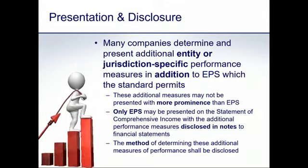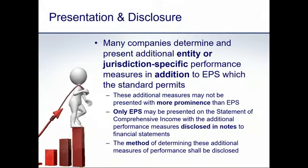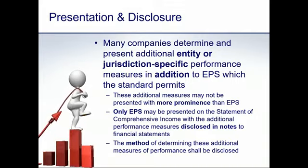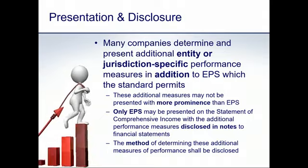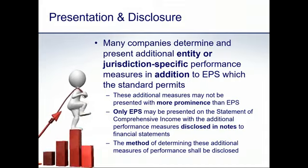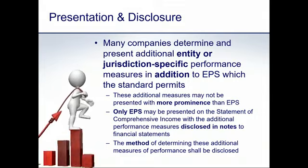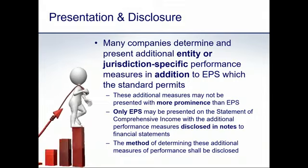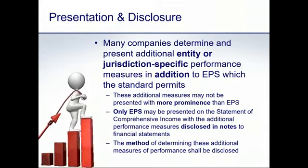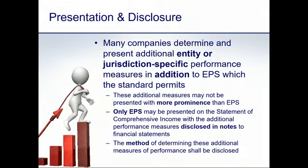In terms of presentation on the statement of comprehensive income, only earnings per share and diluted earnings per share may be presented on the face of the statement. All other additional performance figures should be disclosed in the notes. If a company elects to present alternative figures, it is required to disclose how those calculations are done and what methods were used. You should be curious about what exactly has been included or excluded in determining any non-IAS 33 performance measure.